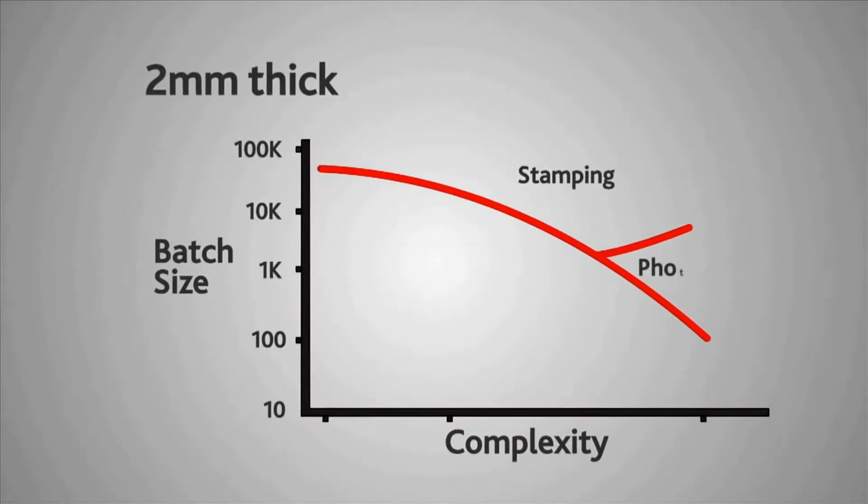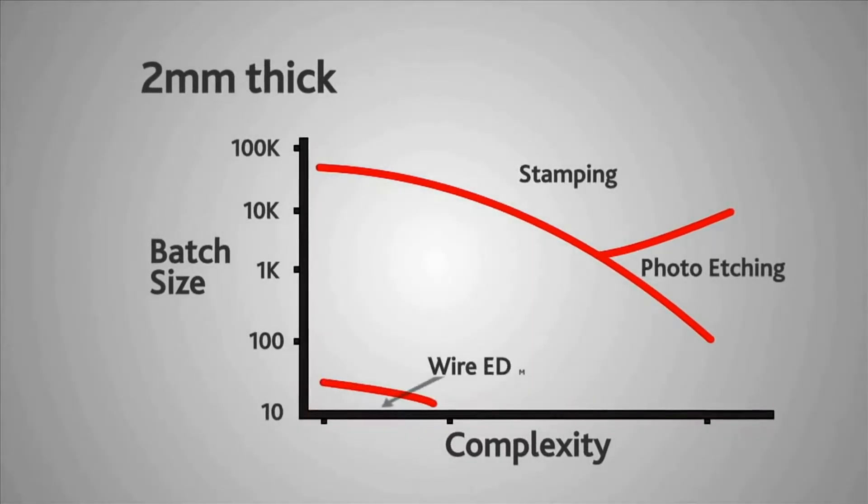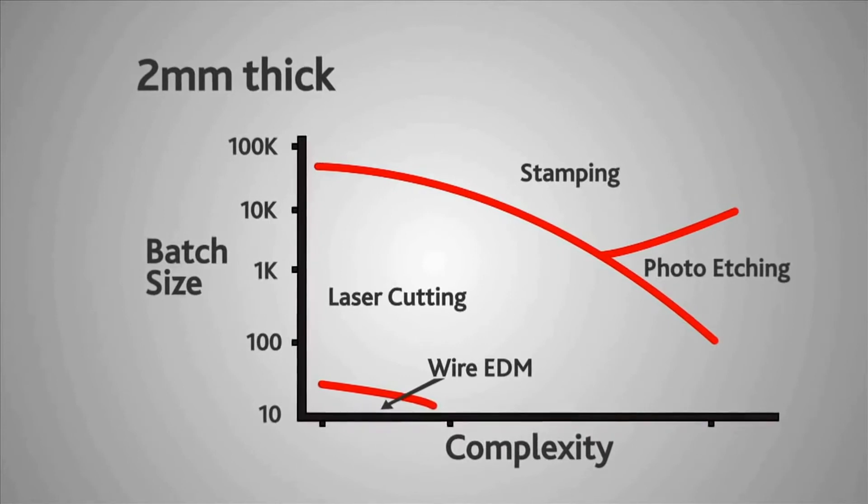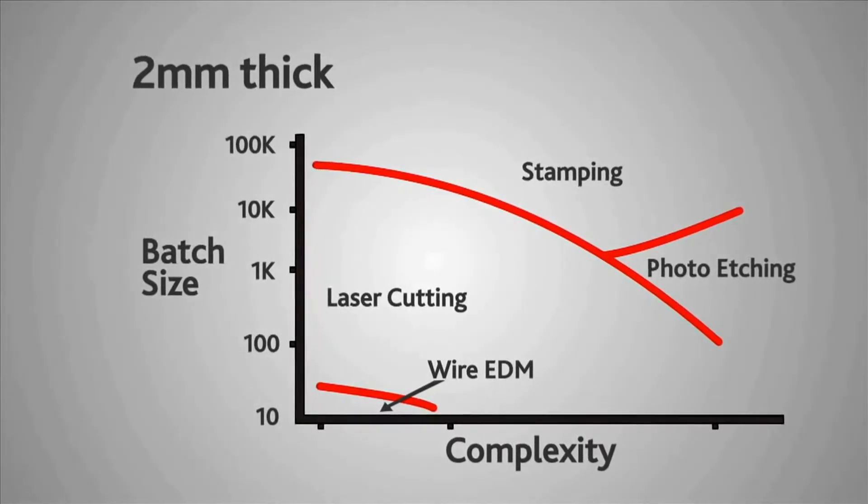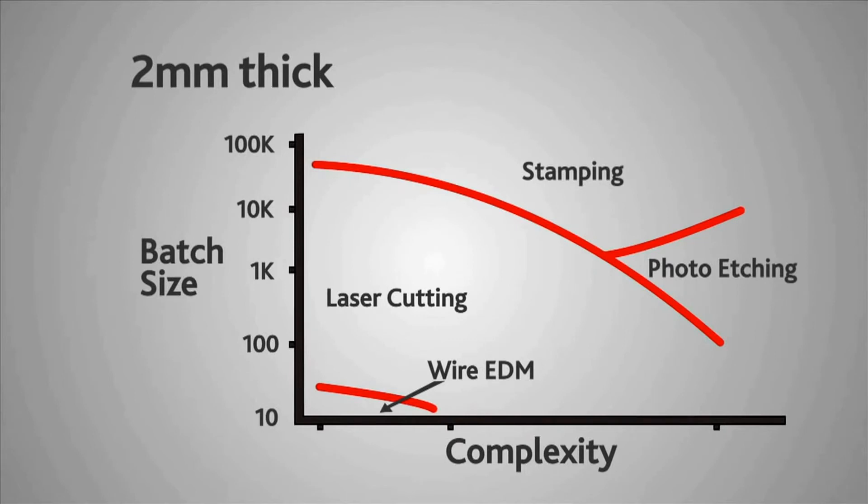If we look at a two millimeter thick simple component, it becomes less economic to make small quantities by wire electrode discharge machining, and photochemical machining is pushed out to a certain extent by laser cutting because it takes a long time to etch through very thick material.